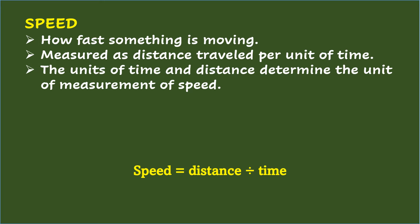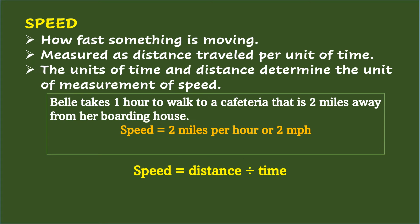To work out what units are for speed, you need to know the units for distance and time. For example, Belle takes one hour to walk to a cafeteria that is two miles away from her boarding house. The distance is two miles, and the time is one hour. Therefore, the speed is equal to two miles per hour.